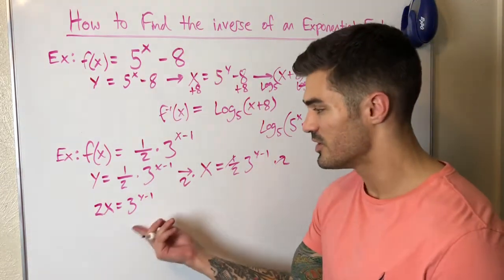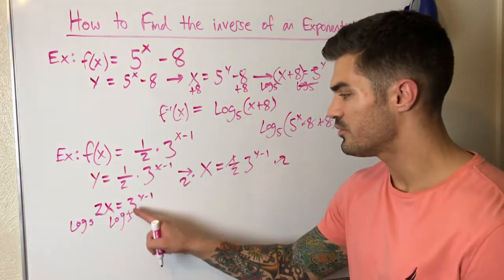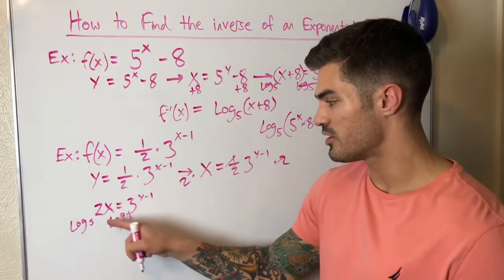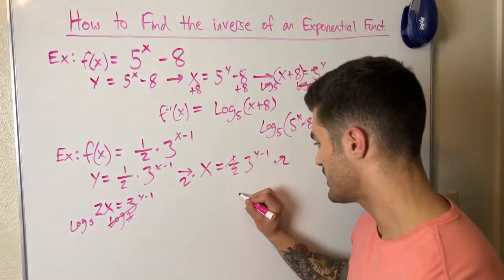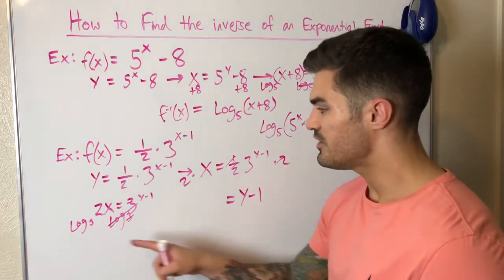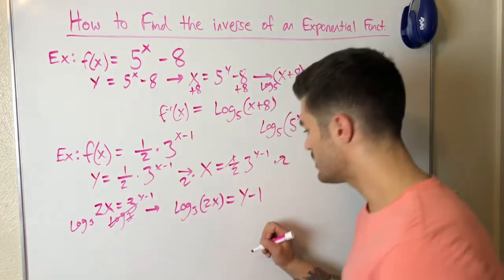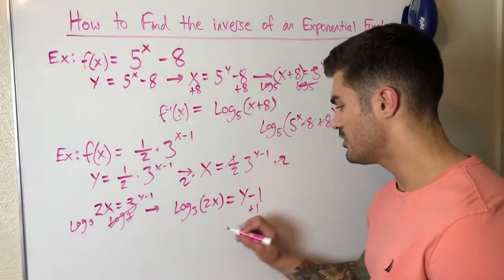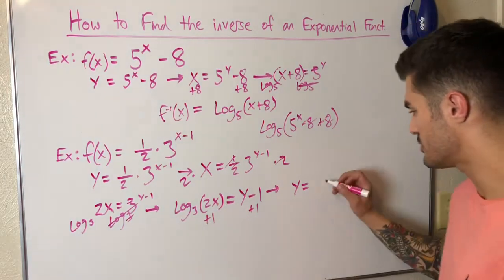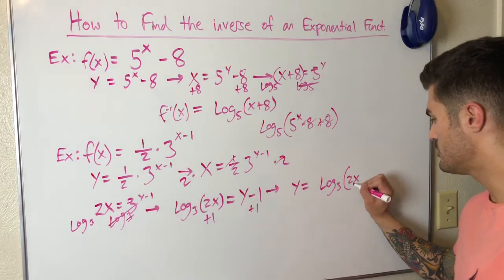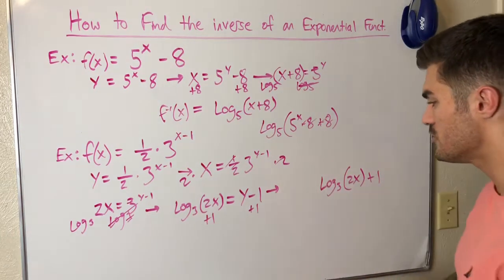Now I take log base 3 of both sides. Log base 3 of 3 is 1, and using logarithm properties, y minus 1 comes out in front. So I have y minus 1 equals log base 3 of 2x. I add 1 to both sides, giving y equals log base 3 of 2x plus 1.